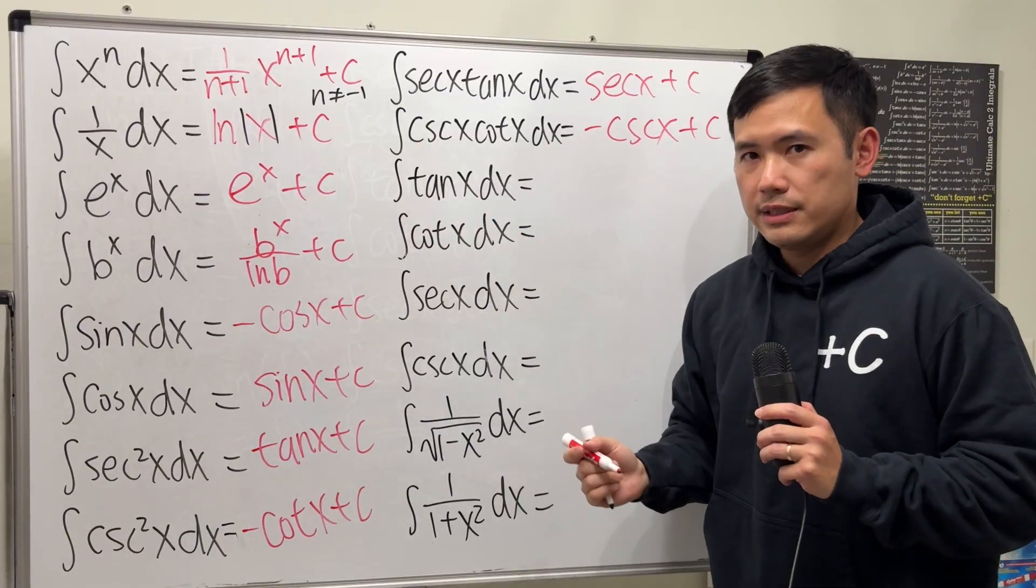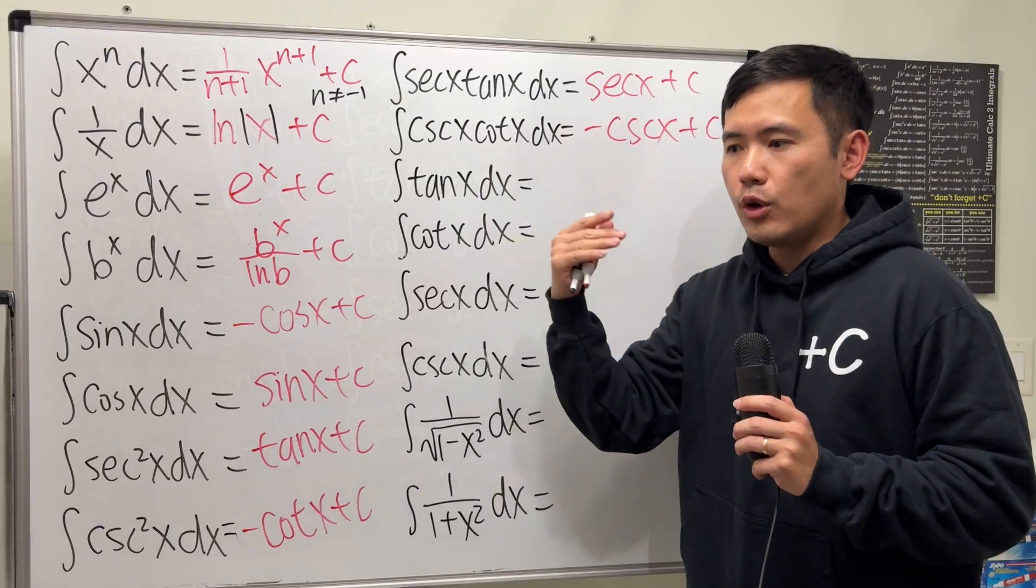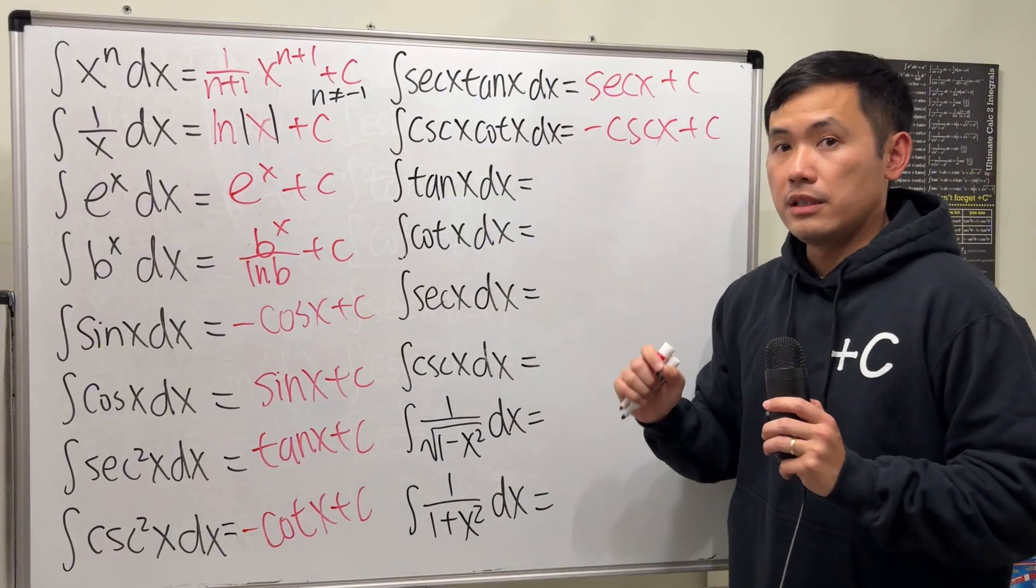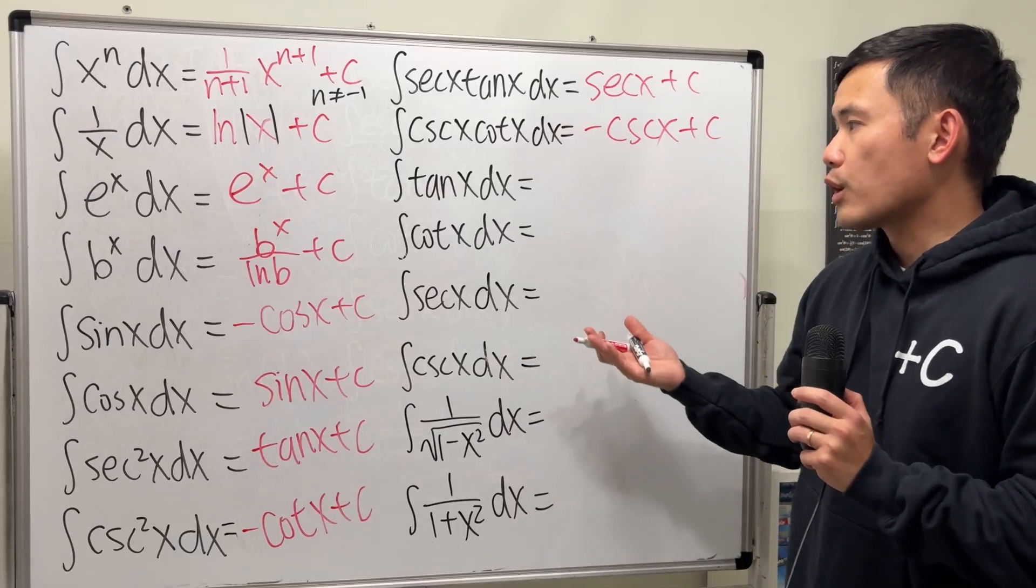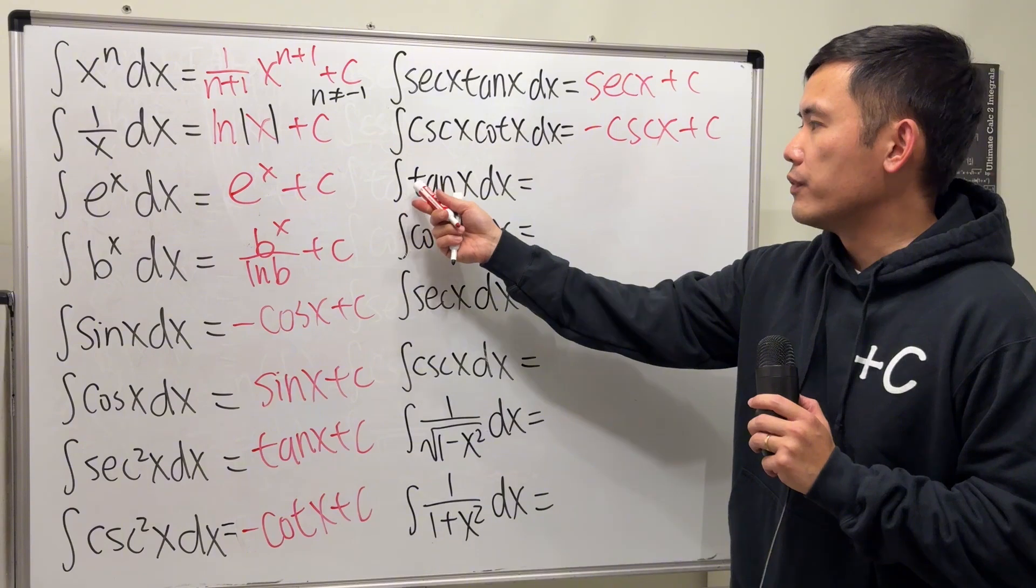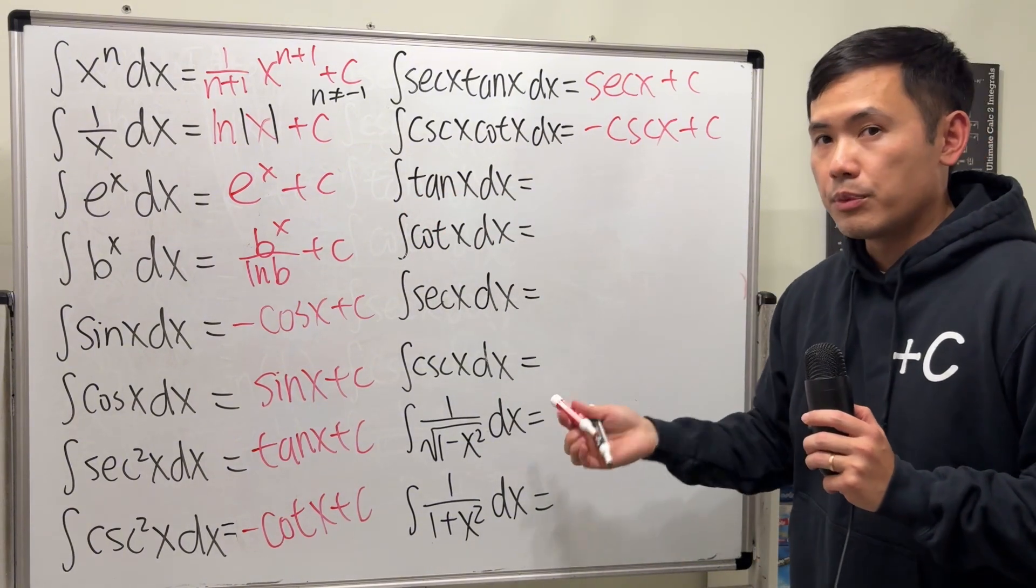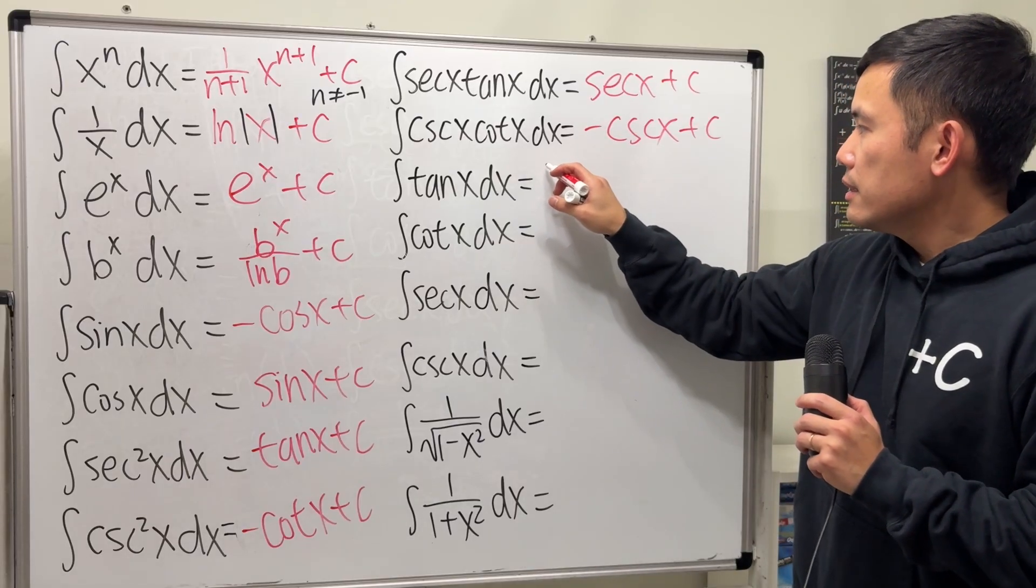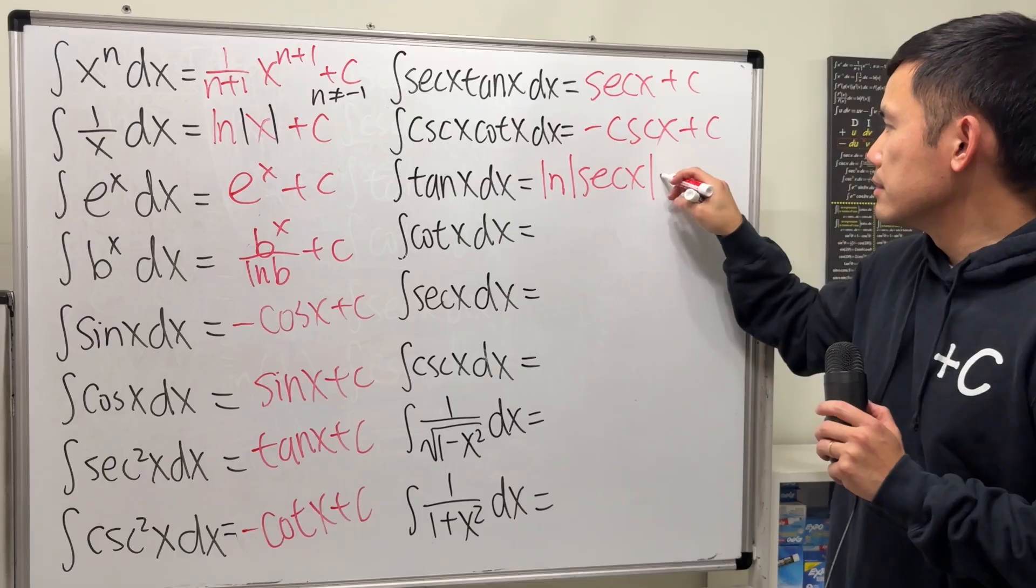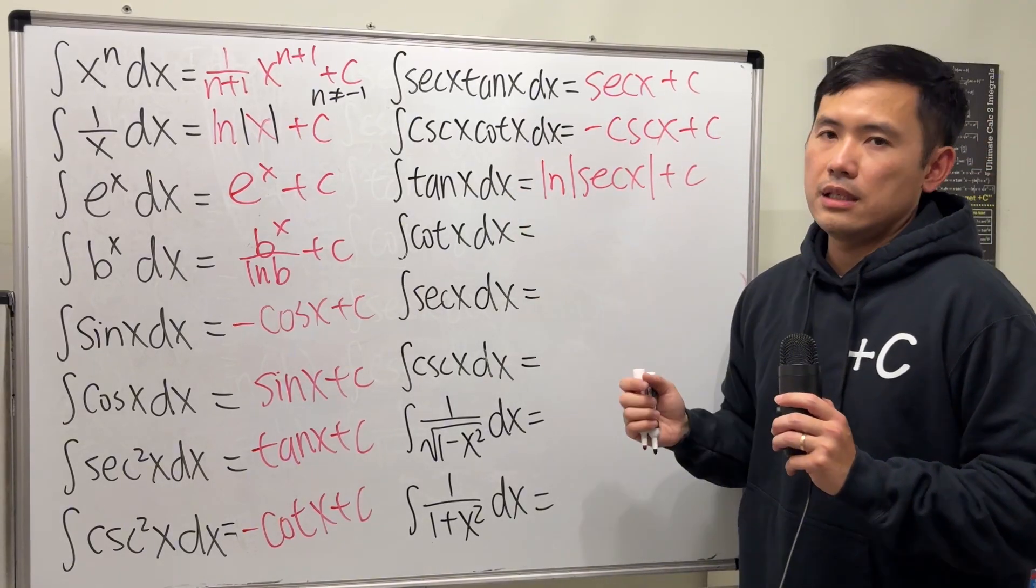How about the integral of tangent x? For this one, at first you will have to do some u-substitution, sin x over cos x, etc. But here's the standard answer that you can just put down, unless the question is asking you specifically to show the integral of tangent x is equal to the answer here by doing u-sub also. The standard answer is ln absolute value of secant x plus C. Sometimes you may see people write negative ln cos x. They are the same thing.